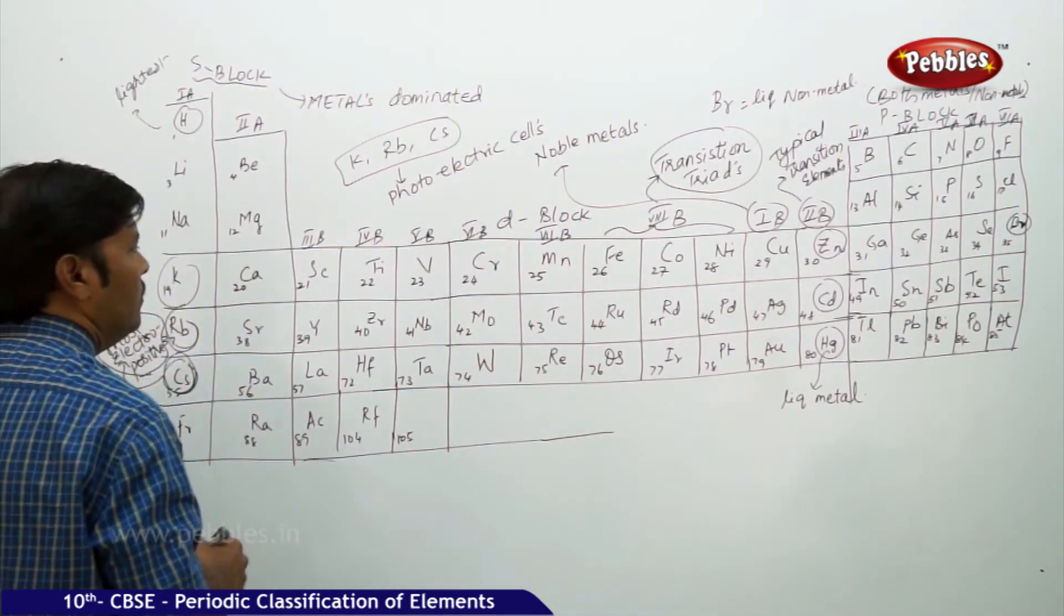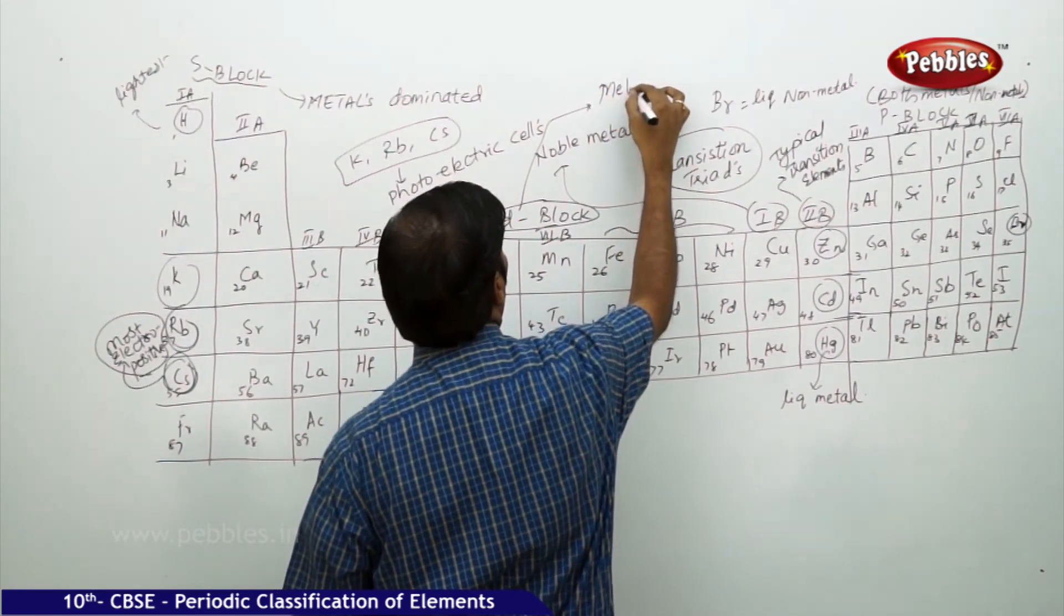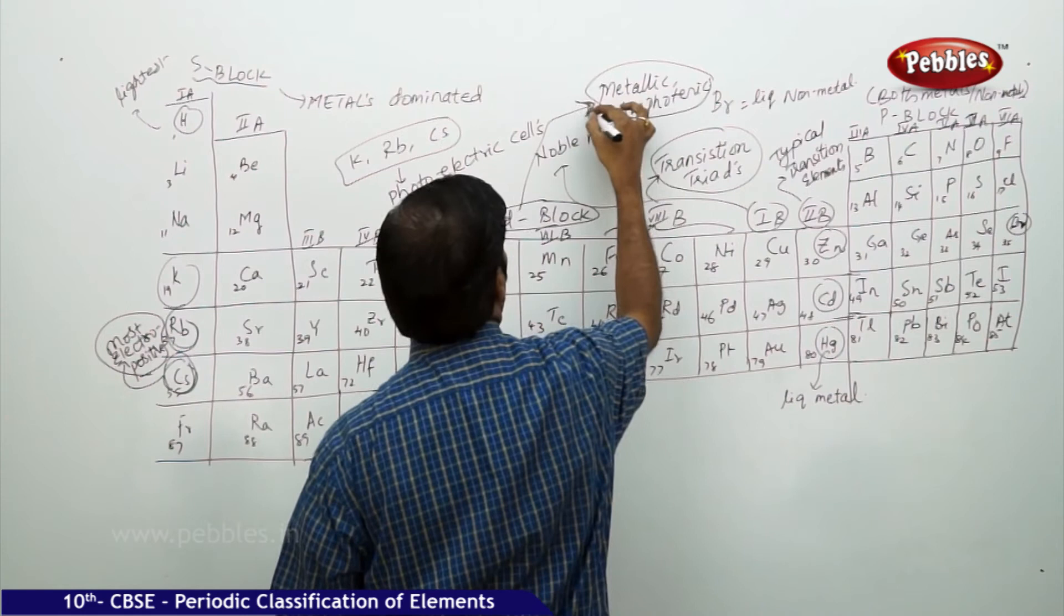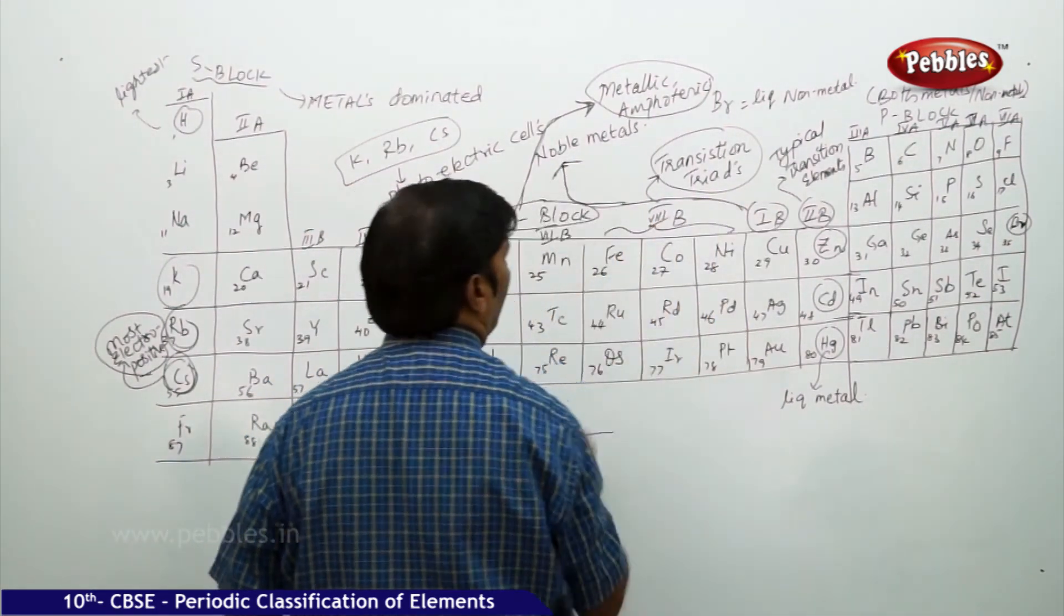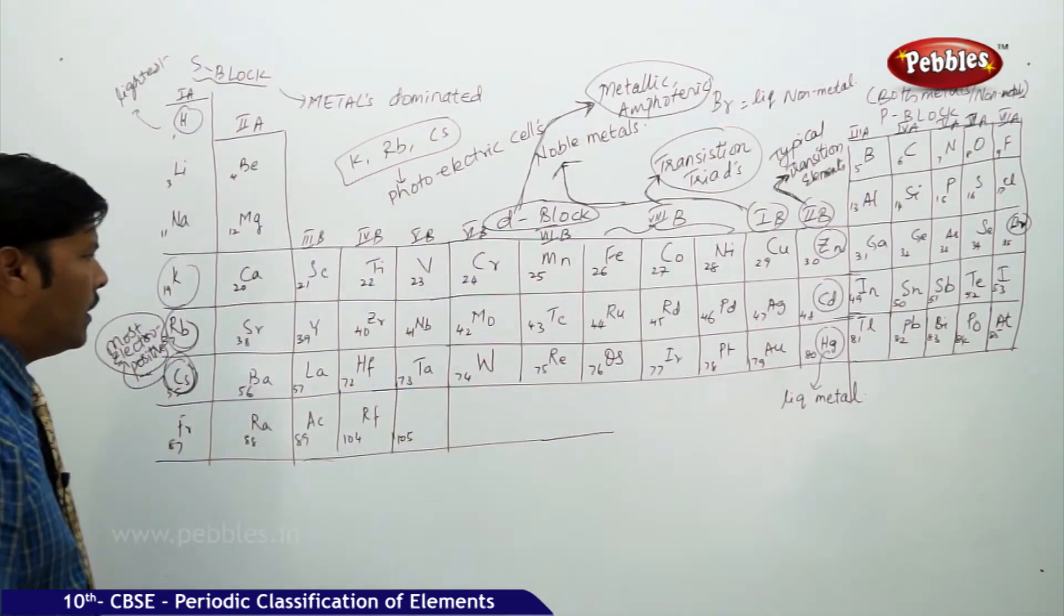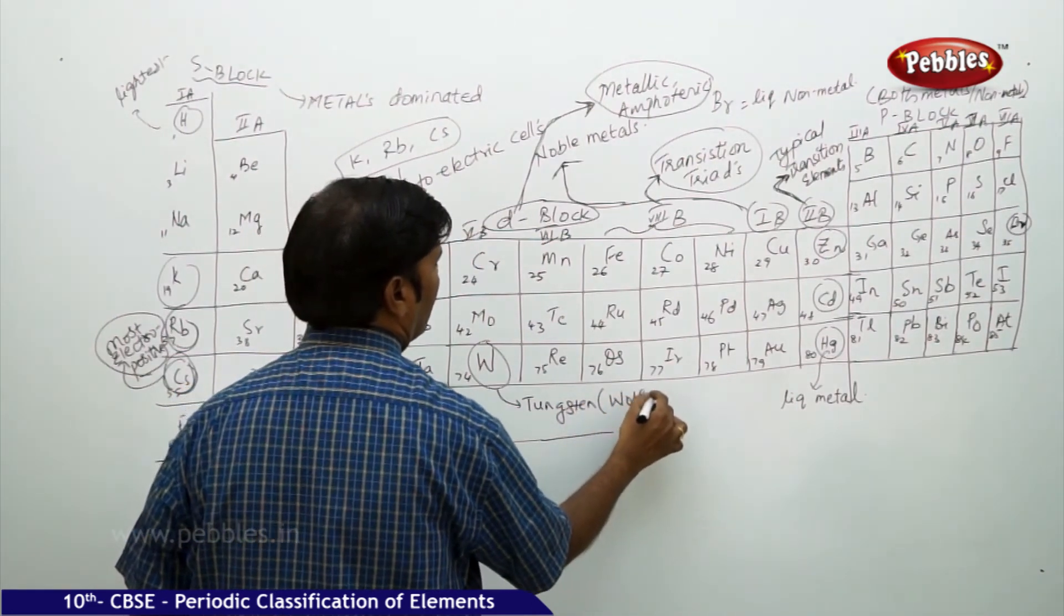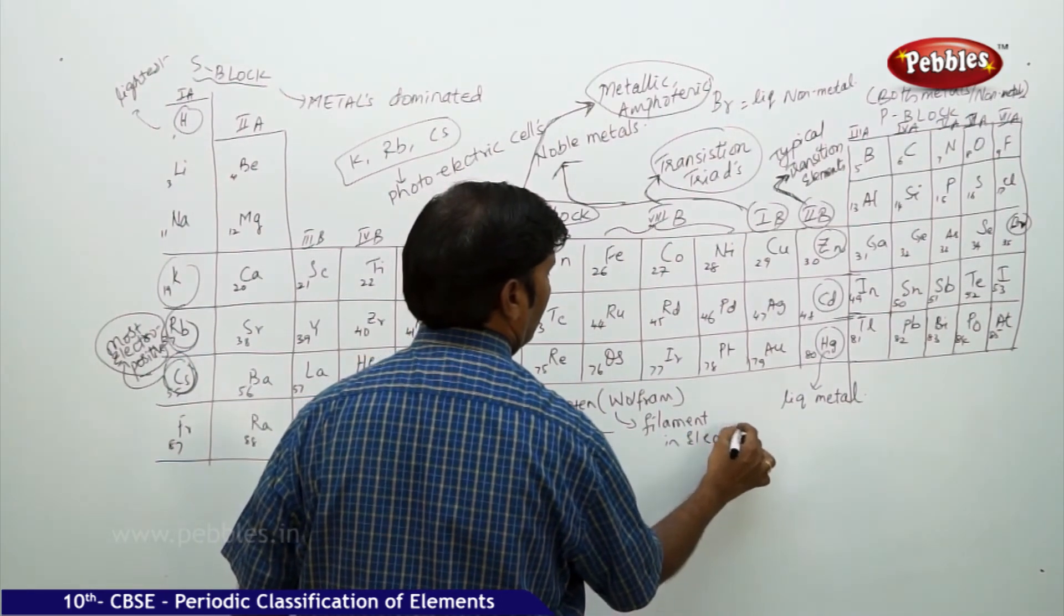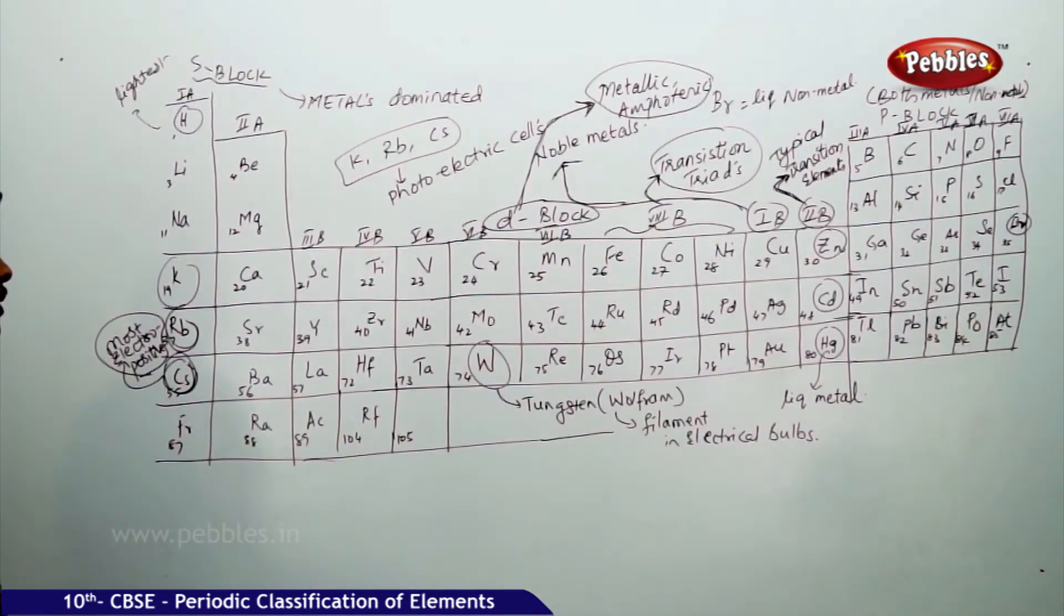If you take D block elements, they are metallic as well as amphoteric. These are typical transition metals. Tungsten, otherwise called Wolfram, is used as a filament in electrical bulbs.